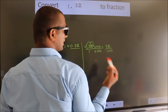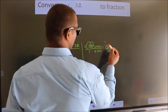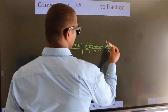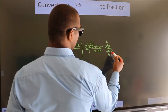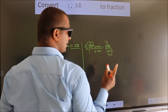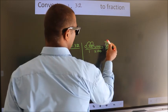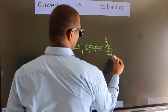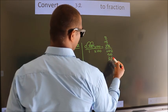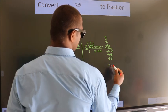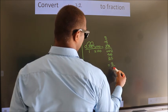Now I cancel with 2. 2 into 32, 2 into 100. I cancel with 2 again. 2 into 16 is 8, 2 into 50 is 25. So our fraction is 8 by 25.